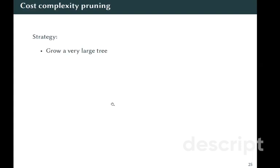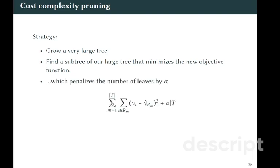So the strategy is we first grow a very large tree, then we find a subtree of our large tree that minimizes the new objective function, where the new objective function is the old objective function—the sum of squared residuals that we wanted to minimize—plus a penalty alpha times the number of final nodes, meaning the number of terminal nodes.